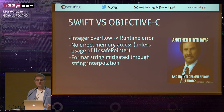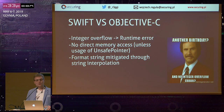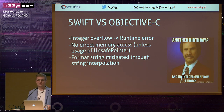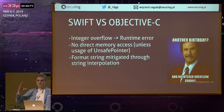Comparing that to Swift: for example, when we have integer overflow, if you overflow the integer it causes a runtime error, so it won't accept bugs like that. We don't have direct memory access — unsafe methods exist but they are explicitly named, like `UnsafePointer`. And format string vulnerabilities from C are mitigated through string interpolation — you just use backslash-braces and the parameter will be interpolated.